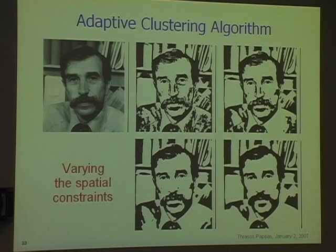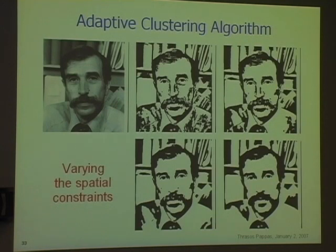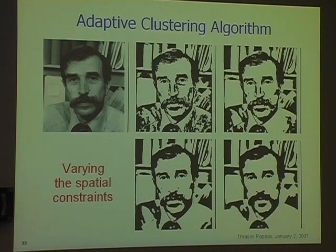What you see here is I change the parameter sigma, or conversely the intensity of the Markov constraint. What it does is make the contours smoother, but you don't lose the important edges — the mustache is always there. It's not sensitive to the parameter settings. The other nice thing is you can control the smoothness of your contours.